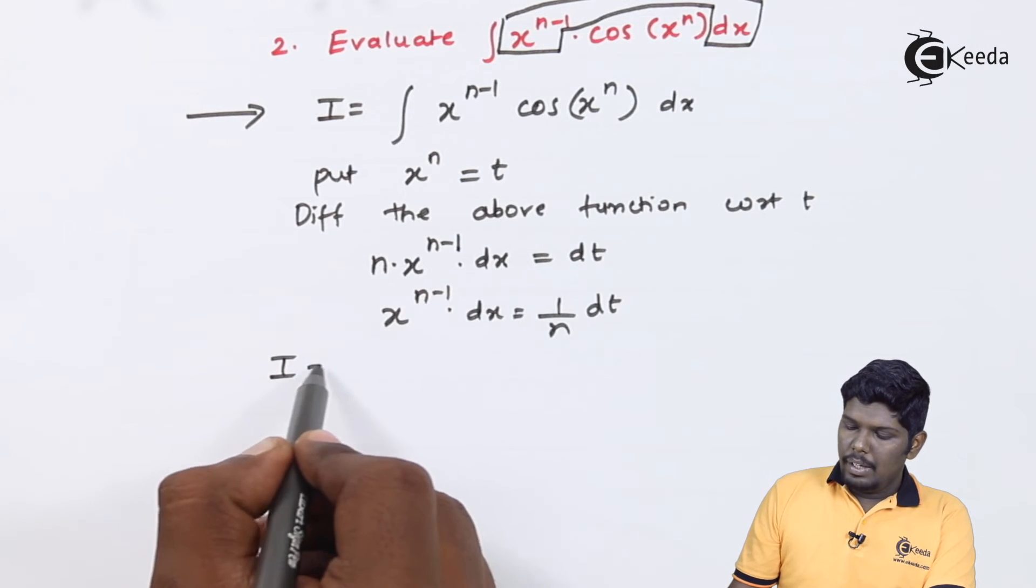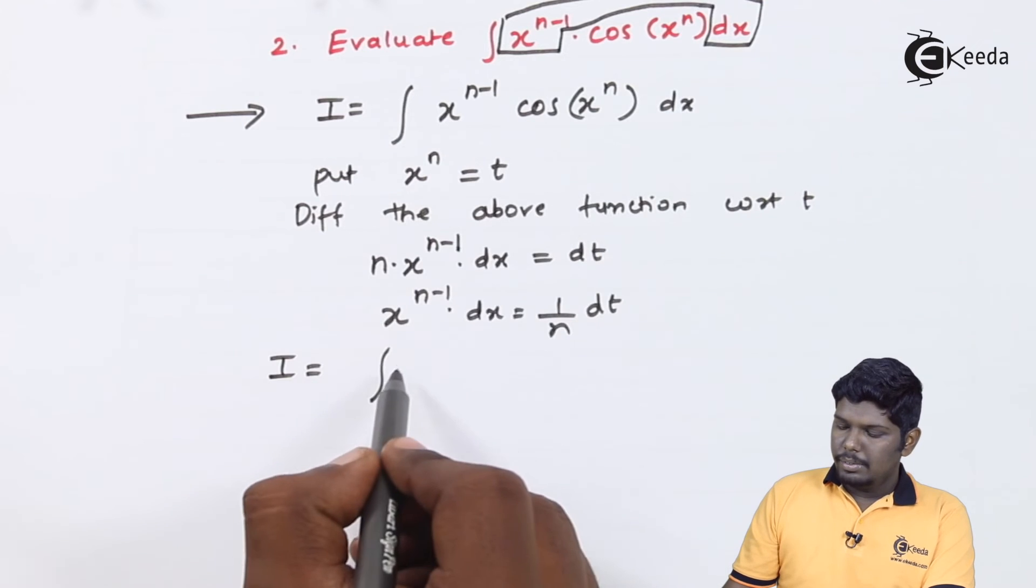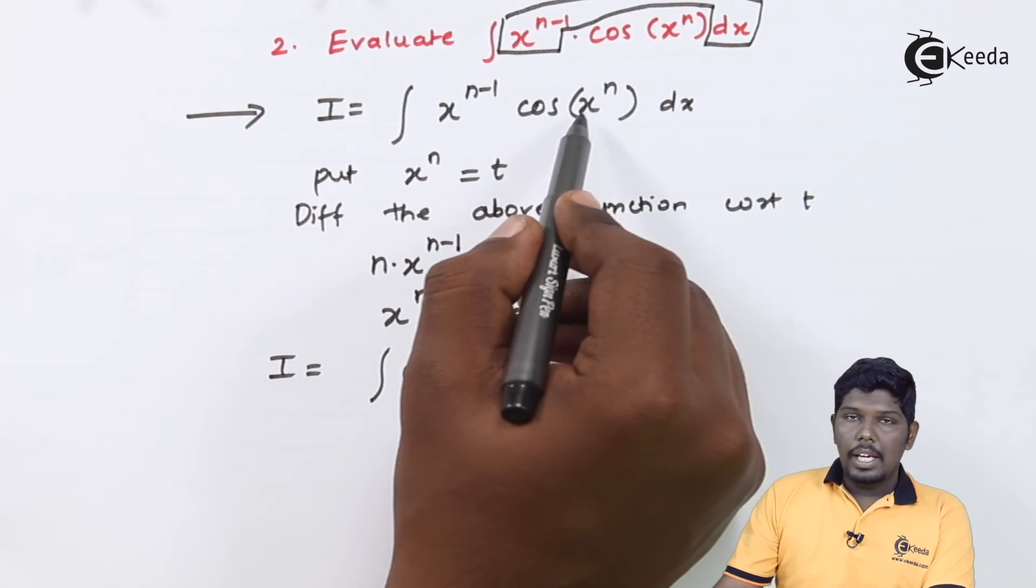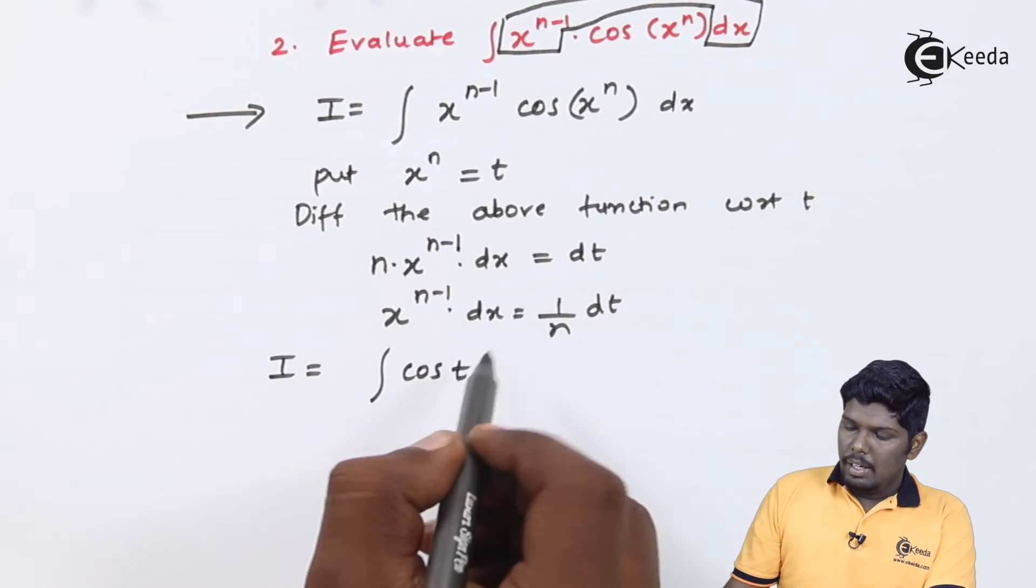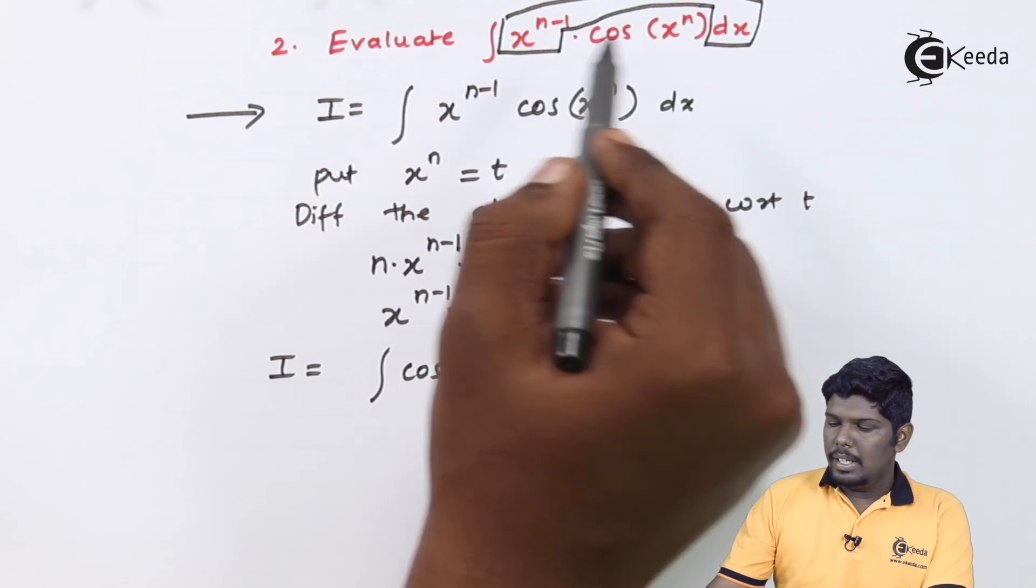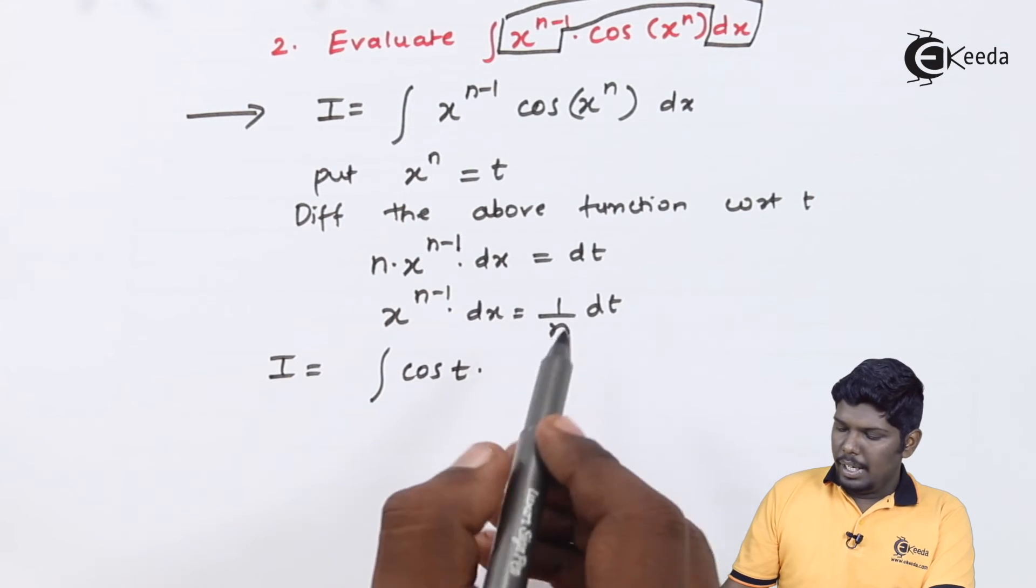Therefore we have integral cos x raise to n is t, and x raise to n minus 1 dx will give you 1 upon n dt.